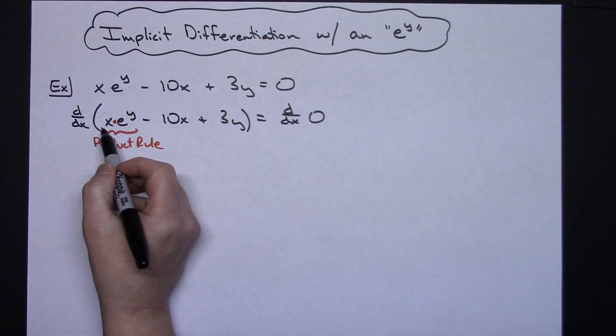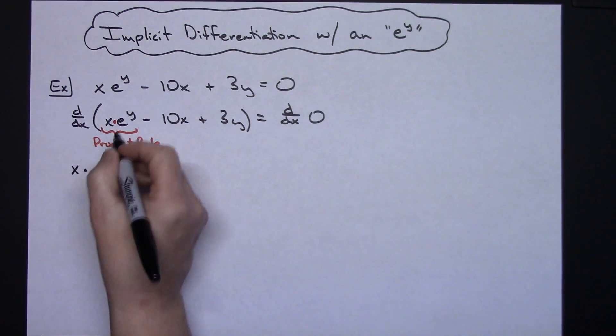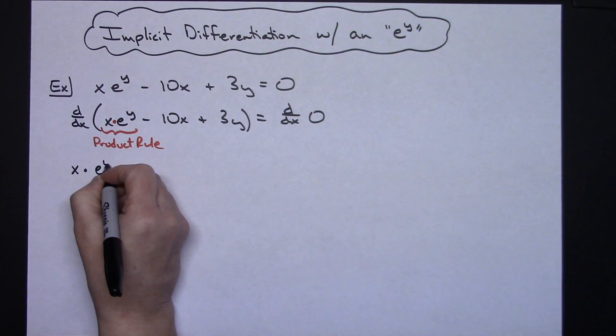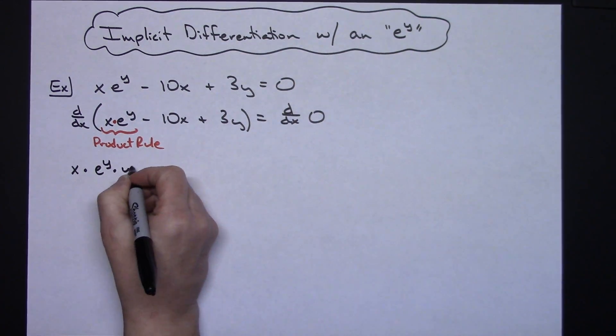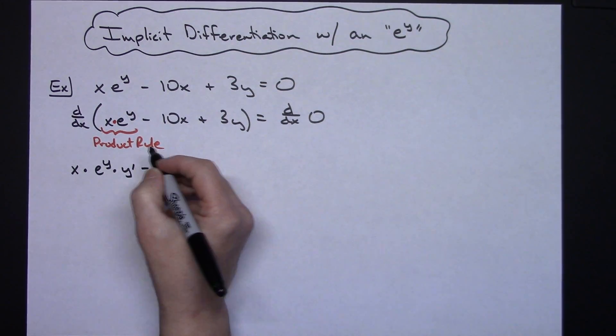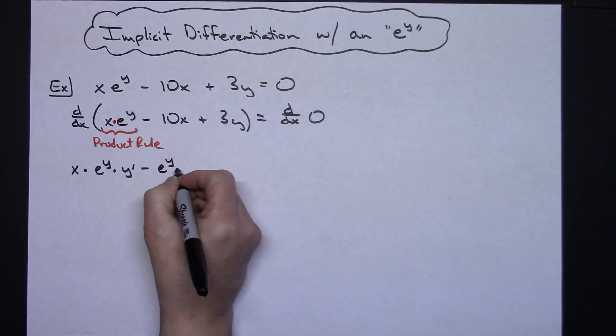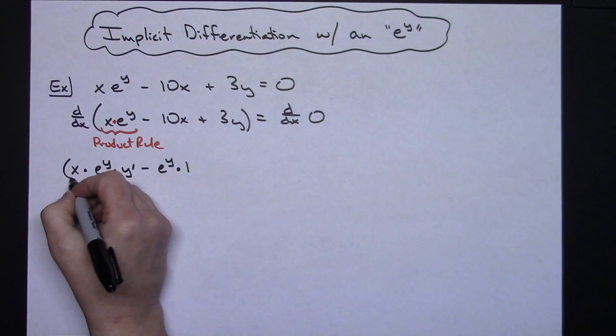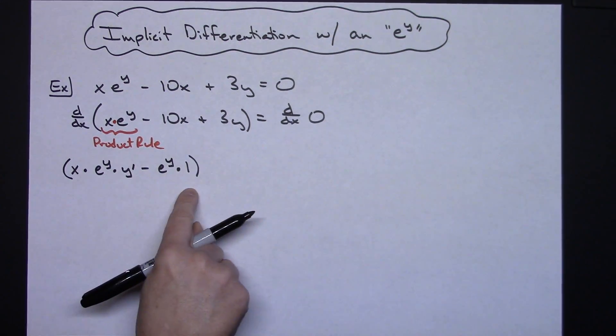We will take the first times the derivative of the second. So derivative of e to the u would be e to the u, u prime. So e to the y, y prime, minus the second, which is e to the y, times the derivative of that x, which is 1. So all of that right there is just the product rule.